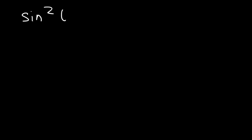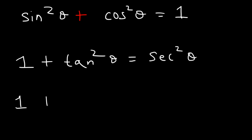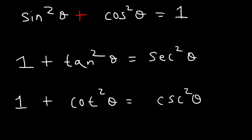Now let's talk about the Pythagorean identities. There are three of them you need to be aware of. The first and most common is sine squared of theta plus cosine squared theta is equal to 1. The other two are: 1 plus tangent squared is equal to secant squared, and 1 plus cotangent squared is equal to cosecant squared. Those are the Pythagorean identities.